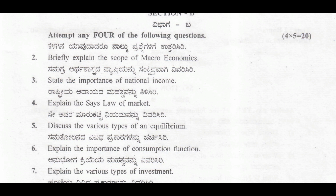We need to write at least one page for these Section B questions. The questions include: briefly explain the scope of microeconomics, state the importance of national income, explain Say's law of market, discuss the various types of equilibrium, explain the importance of consumption function, and explain the various types of investment. Out of these six, we need to answer any four.